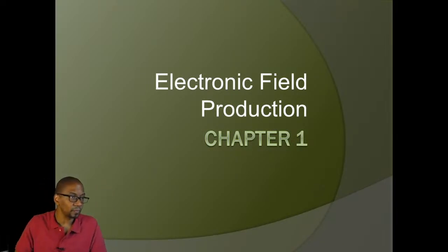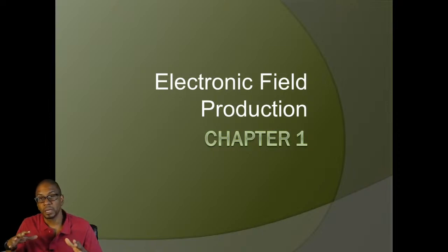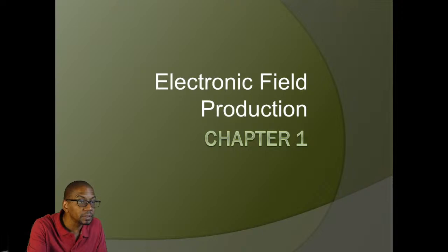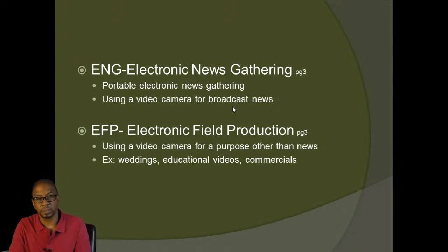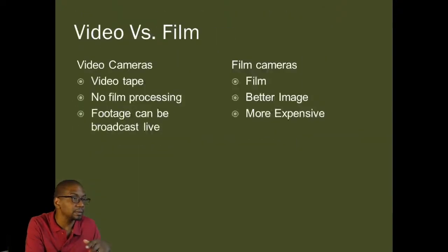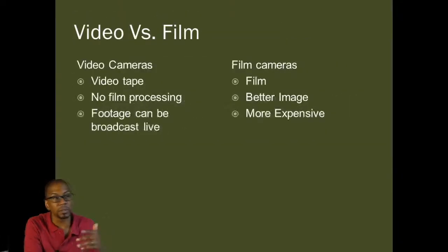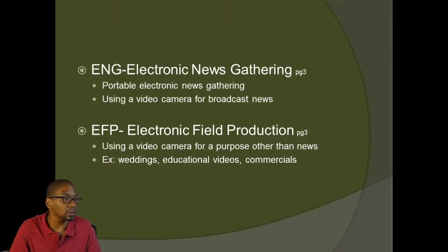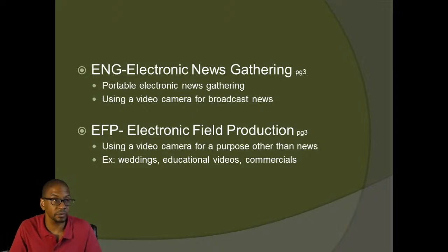Let's get into the first chapter, which is pretty much telling you the difference between electronic field production and electronic news gathering. EFP, by definition - using a video camera for a purpose other than news. That is the textbook definition of electronic field production. It includes tons of things.